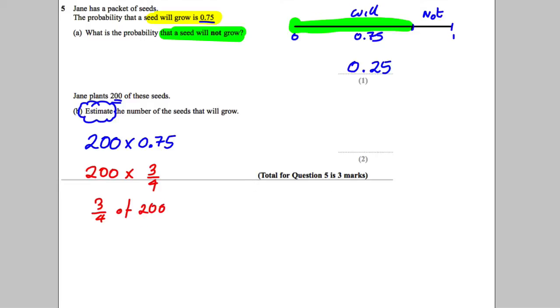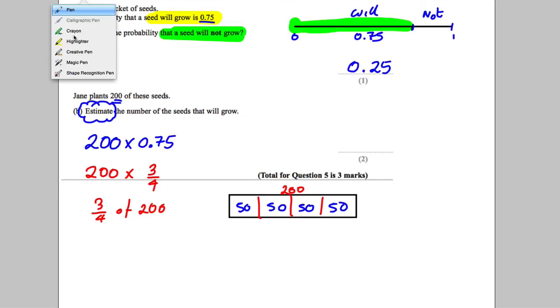I tend to show these with a little box, so we've got 200 here. Three quarters of this - we separate into quarters: 1, 2, 3, 4. What goes in each box? 50, 50, 50, 50. And we want three quarters, so three quarters is going to be equal to 150. So my estimate is 150. We just write that in.